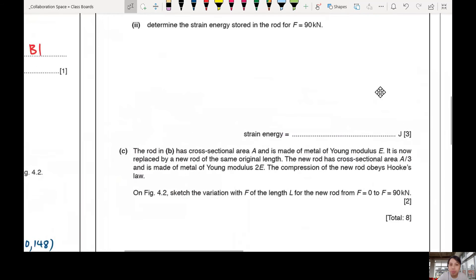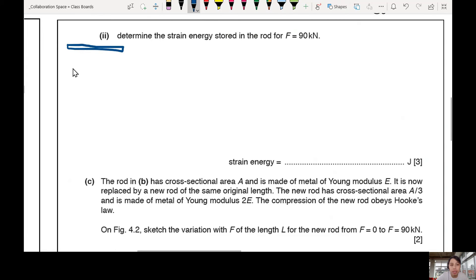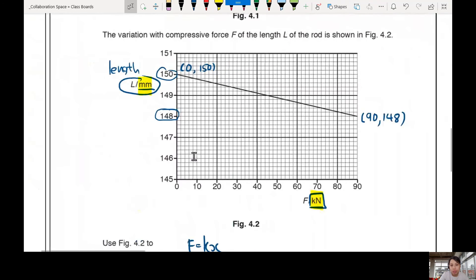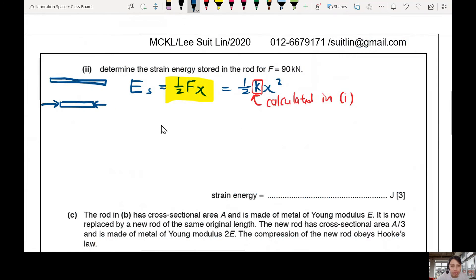This one's a bit tricky but still okay. Determine the strain energy stored in the rod for 90 kilonewton. So the rod is originally a very chill one. Then when you squash it to become shorter, you are putting in some potential energy. The moment you let go, the rod might come out, might become longer, if it's not permanently plastically deformed. So for strain energy, there are two ways to calculate it: half FX or half KX square if it obeys Hooke's law. Which one shall we use? I usually prefer to use this one if possible. Because this K is a calculated value I calculate in part one. So if my value of K is wrong, then if I use the wrong value here, wrong already. So I prefer to use whenever possible original values.